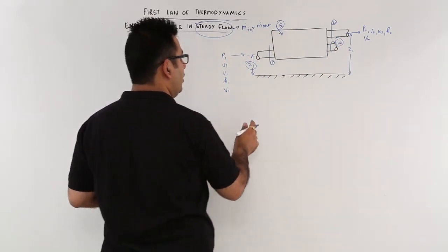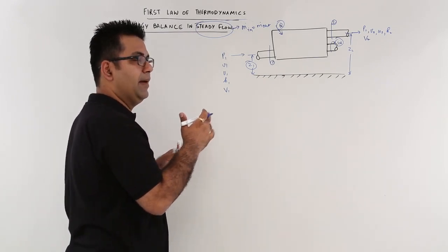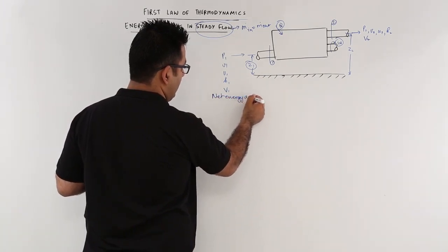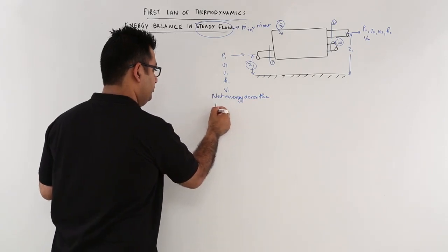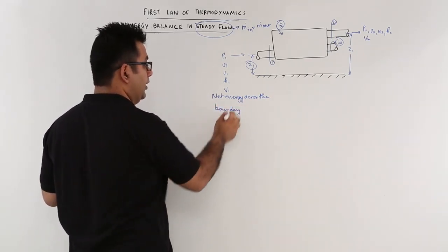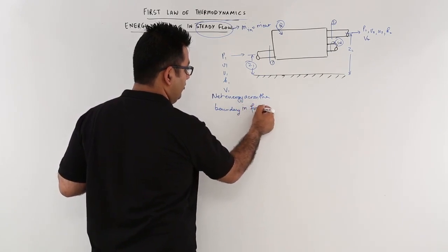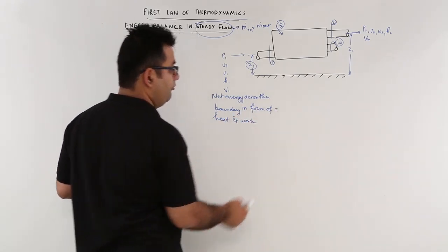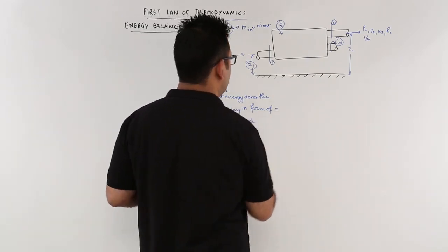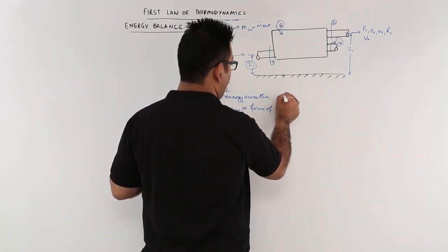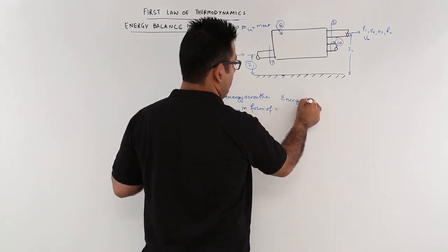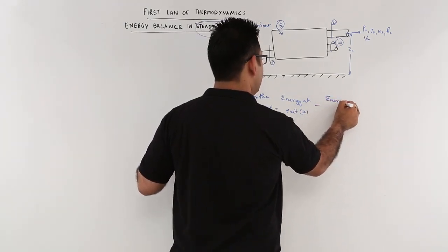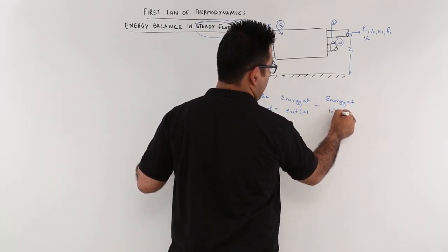Now if you look at the balance of energy, the net energy across the boundary in the form of heat and work is equal to the energy at exit, that is section 2, minus the energy at inlet, that is section 1.